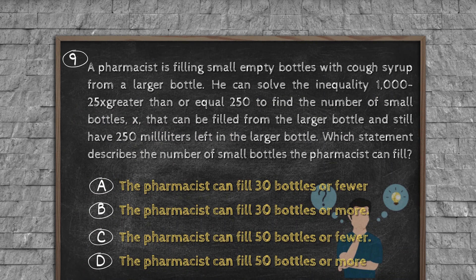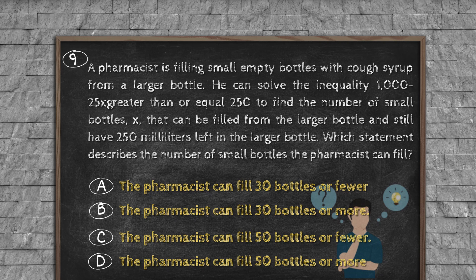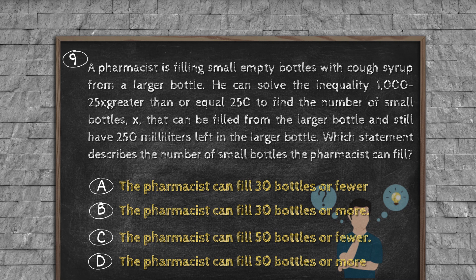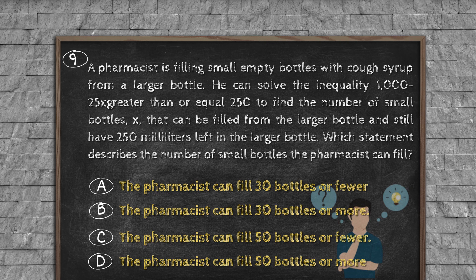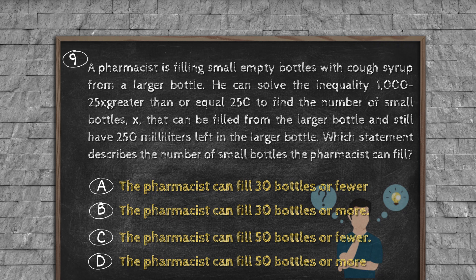Question number nine: A pharmacist is filling small empty bottles with cough syrup from a larger bottle. He can solve the inequality 1,025x ≥ 250 to find the number of small bottles x that can be filled from the larger bottle and still have 250 milliliters left in the larger bottle. Which statement describes the number of small bottles the pharmacist can fill? Option A: The pharmacist can fill 30 bottles or fewer. Option B: The pharmacist can fill 30 bottles or more. Option C: The pharmacist can fill 50 bottles or fewer. Option D: The pharmacist can fill 50 bottles or more.